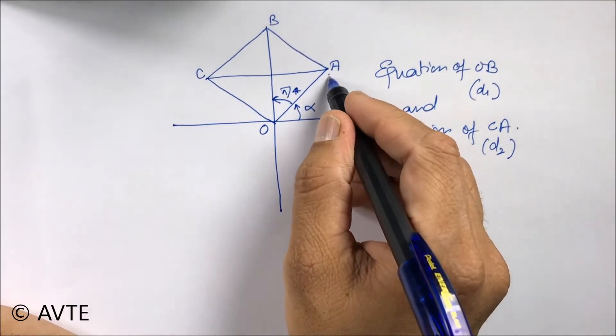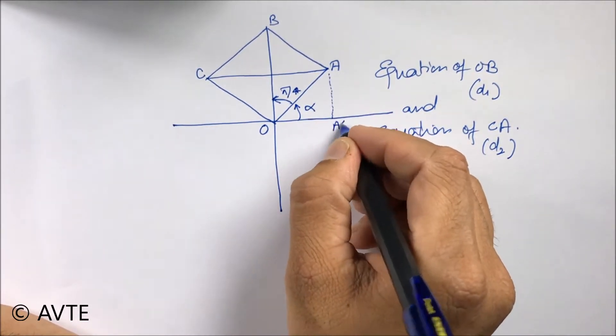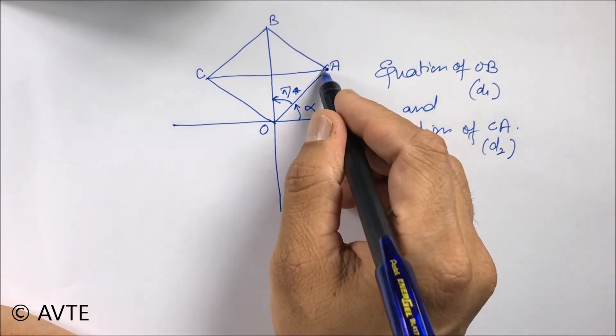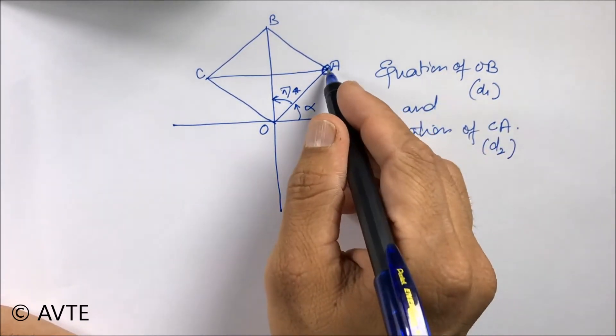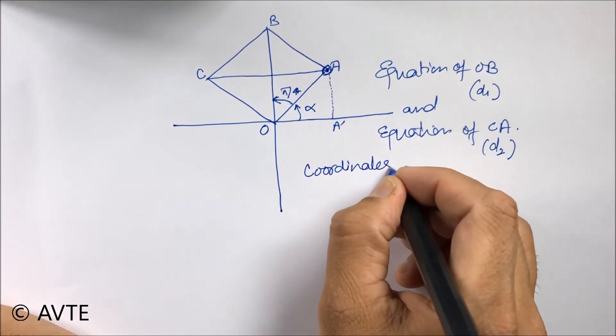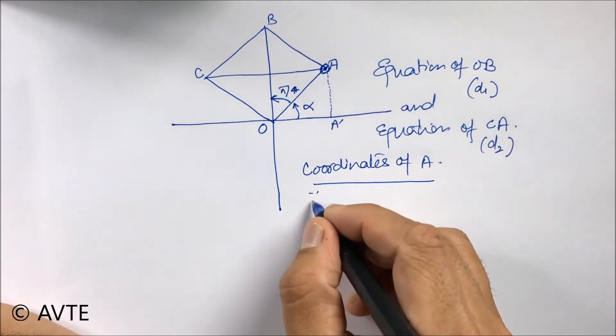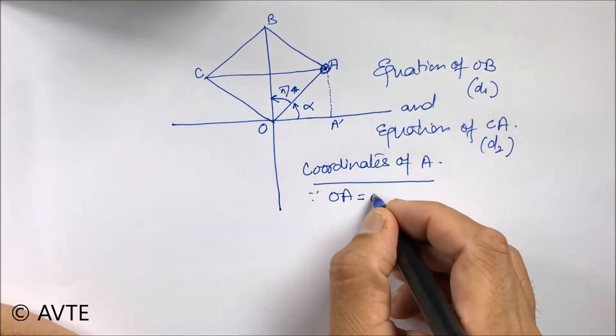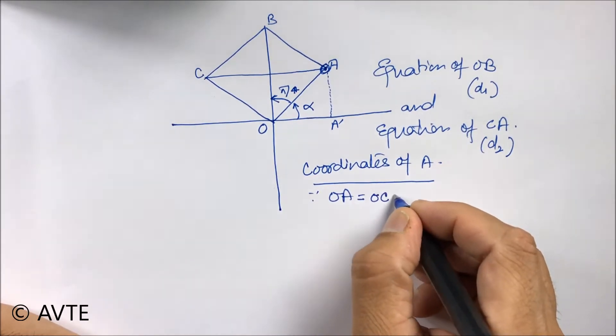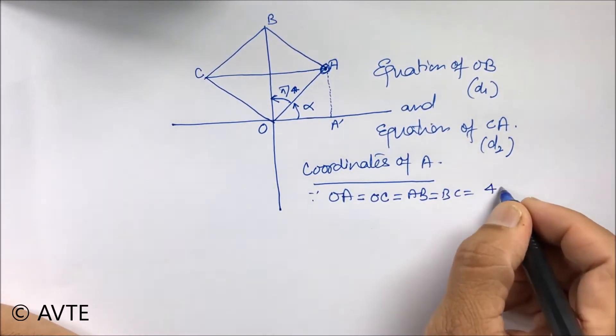Now drop a perpendicular and take it as A dash. So can you find the coordinates of A? Well because OA is equal to OC is equal to AB is equal to BC is equal to four units.